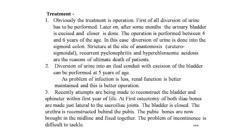Treatment: the treatment is operative. First, diversion of urine is performed; later on, after some months, the urinary bladder is excised and closure is done. The operation is performed between four and six years of age. Diversion of urine into the sigmoid colon carries risks of stricture at the anastomosis site, recurrent pyelonephritis, and hyperchloremic acidosis. Diversion of urine into an ileal conduit with excision of the bladder can be performed at five years of age — infection is less, renal function is better maintained. Recent attempts are being made to reconstruct the bladder and sphincters within the first year of life: osteotomy of both iliac bones is made just lateral to the sacroiliac joints, the bladder is closed, the urethra is reconstructed behind the pubis, and the pubic bones are brought to the midline and fixed together. The problem of incontinence remains difficult to tackle.